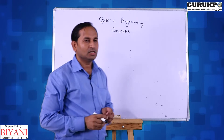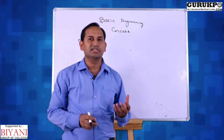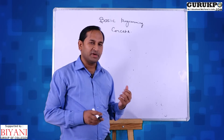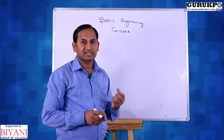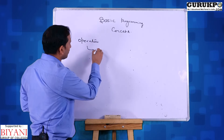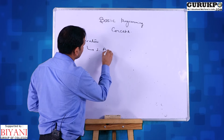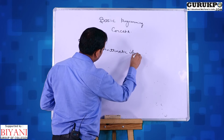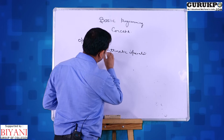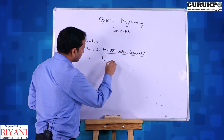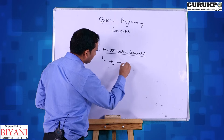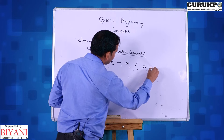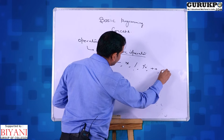Now we are discussing operators. Operators are symbols which are generally used to perform operations. We have different types of operators available in C programming language. The primary operators include arithmetic operators: plus, minus, multiply, divide, modulus, increment (plus plus), and decrement (minus minus).